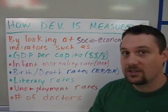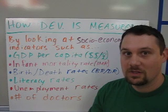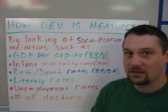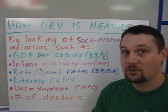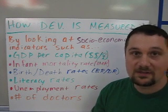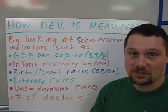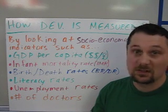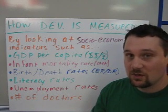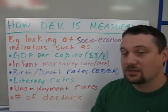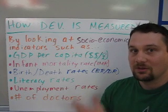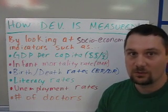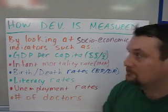There are a lot of other indicators of development that can be used to figure out things about a country, like number of telephone lines, percentage of internet access, and the number of McDonald's. There are all sorts of really interesting stats you can look at, but these are the basic ones we'll be dealing with for right now.